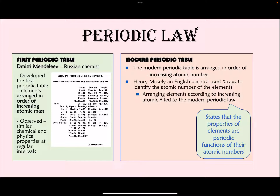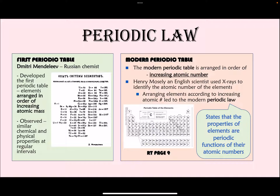Periodic law states that the properties of elements are a periodic function of their atomic numbers, meaning at specific intervals we notice similar chemical properties. This was used to figure out where each element should be placed in the periodic table. This is what our modern periodic table looks like — it is given to you on page nine in your reference table packet.